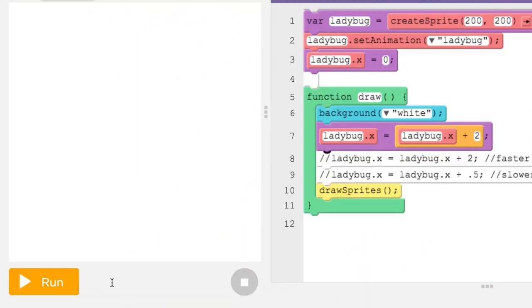If we add a larger amount to the X position, the sprite looks like it's moving faster. Adding a smaller amount makes the sprite look like it's moving more slowly.